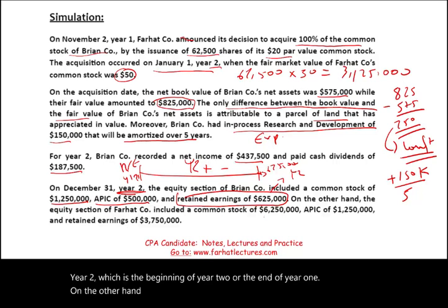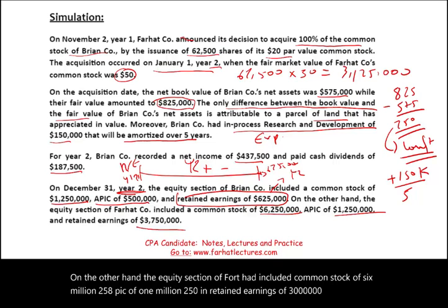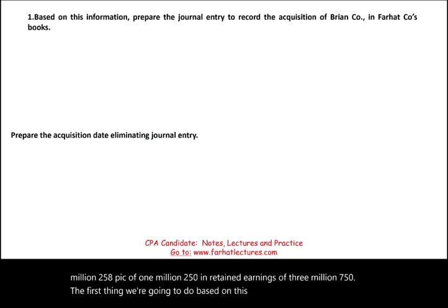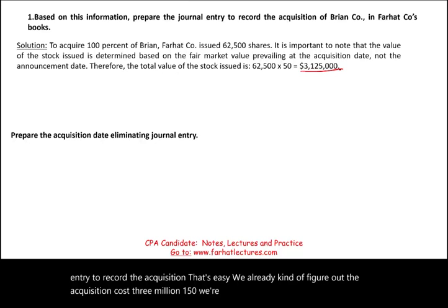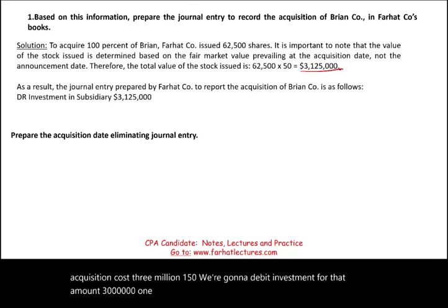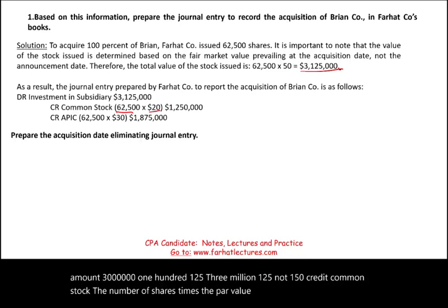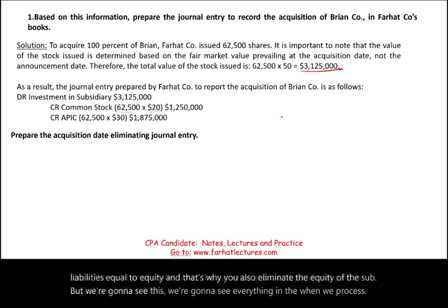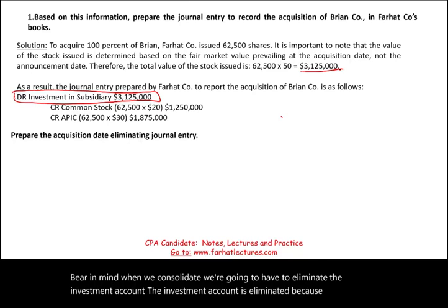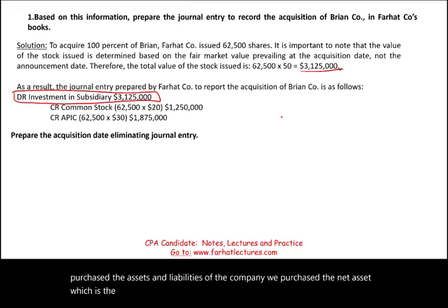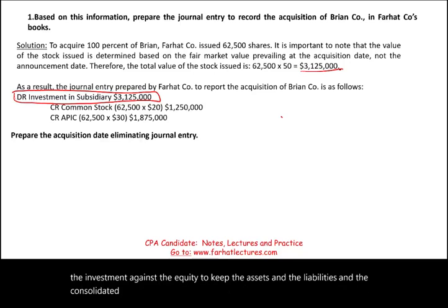Farhat's equity section included common stock of $6,250,000, APIC of $1,250,000, and retained earnings of $3,750,000. The acquisition journal entry debits Investment for $3,125,000, credits Common Stock for the shares times par value, and credits Additional Paid-in Capital of $1,875,000. When we consolidate, we must eliminate the investment account, keeping only the underlying assets, liabilities, and equity on the consolidated statements.